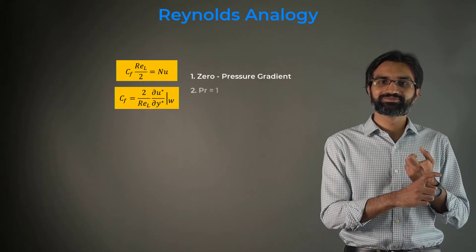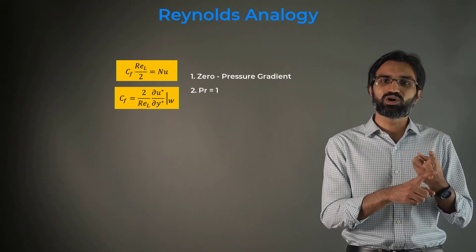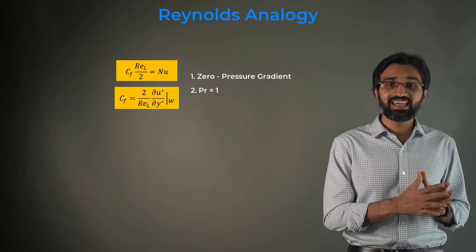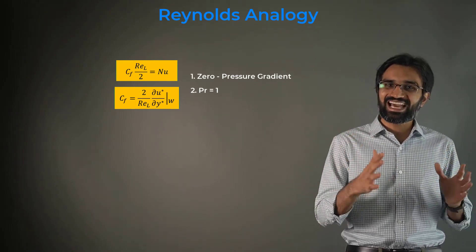zero pressure gradient and Prandtl number equal to 1. This analogy is therefore most applicable for gas flows.